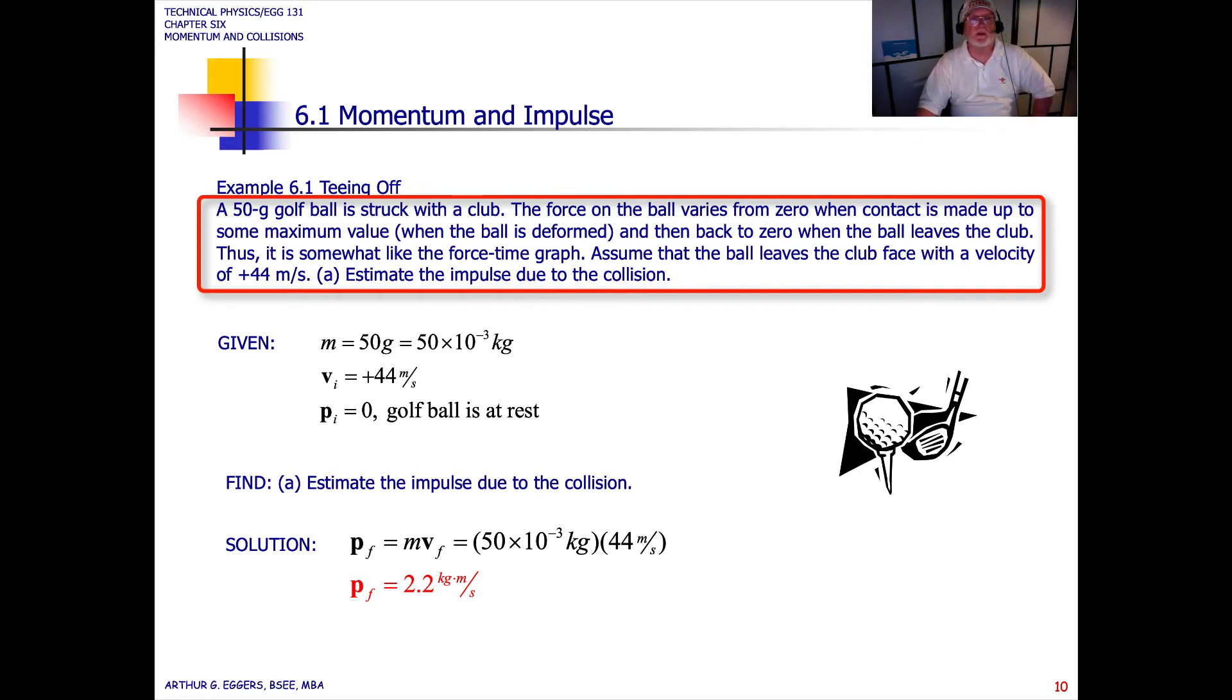Let's take a look at momentum and impulse using a golf ball example. A 50 gram golf ball is struck with a club. The force on the ball varies from zero when contact is made up to some maximum value when the ball is deformed, then back to zero when the ball leaves the club. It is somewhat like the force time graph. Assume that the ball leaves the club face with a velocity of 44 meters per second.